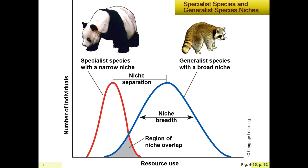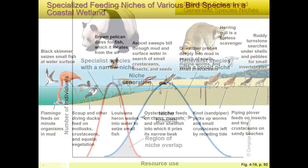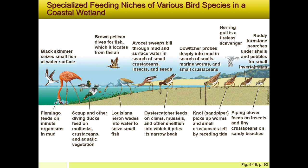When two species' niches overlap, competition occurs, and the specialist species is harmed more than the generalist. For example, in a coastal wetland, different bird species have very specific niches — some feed far offshore, some close to shore, some right on the beach. If pollution enters the wider offshore areas, it directly harms the species with that very narrow niche.